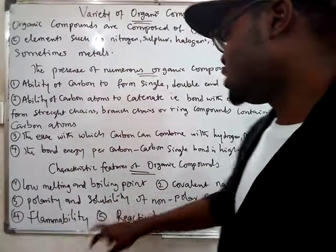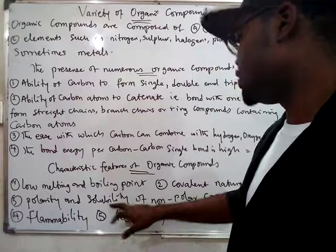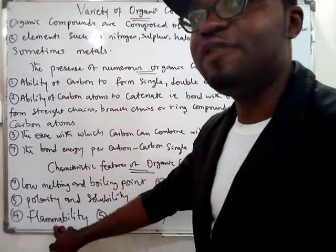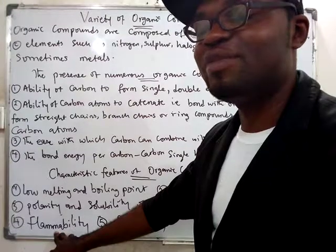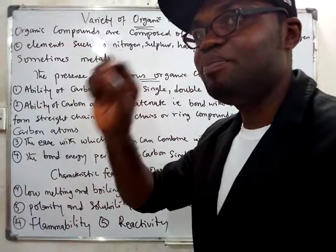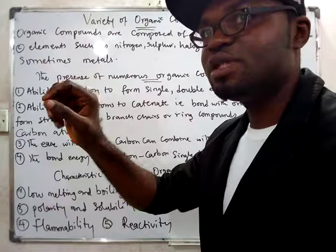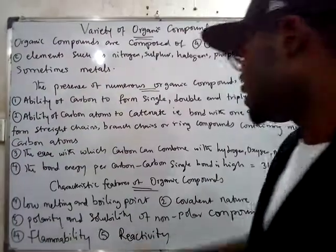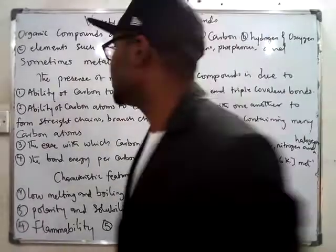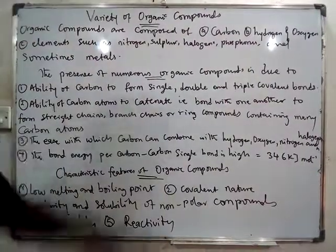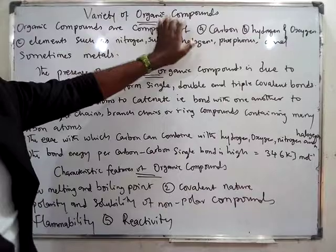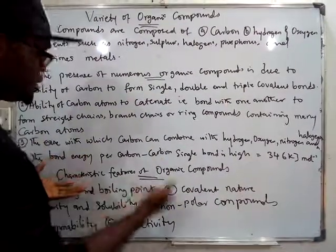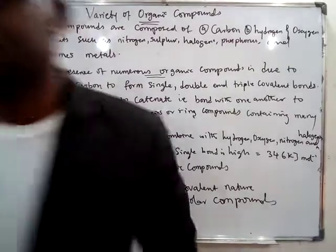To summarize the characteristics of organic compounds: they are highly flammable — where hydrocarbons are stored you will see warnings because they are highly flammable; their reactions are very slow; they have low melting and boiling points; they are covalent and non-polar in nature; and they are only soluble in non-polar solvents. We've now covered the reasons for numerous organic compounds and their characteristics. Thank you.